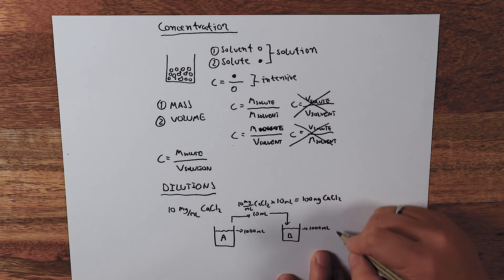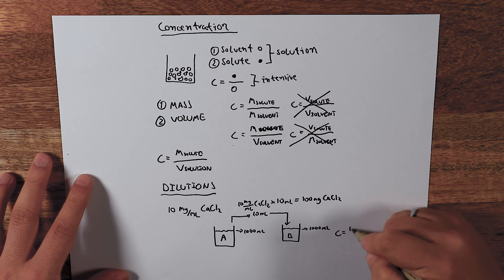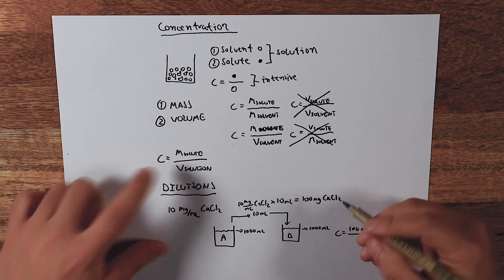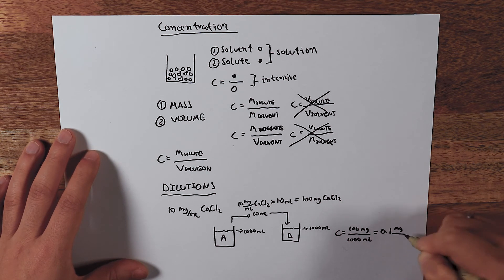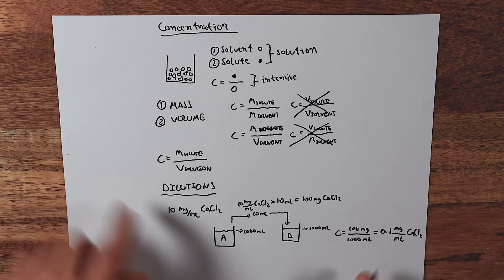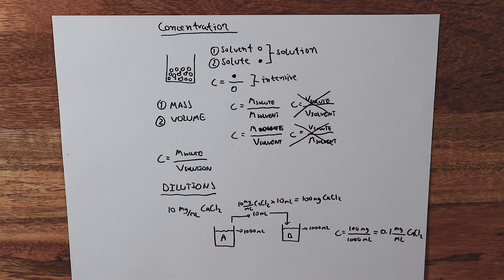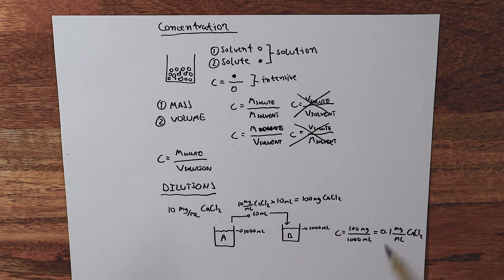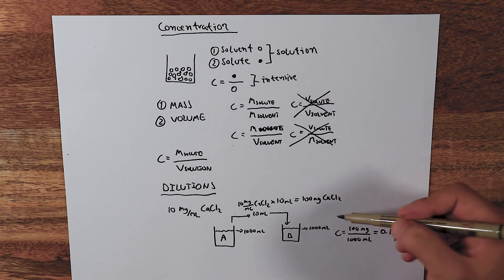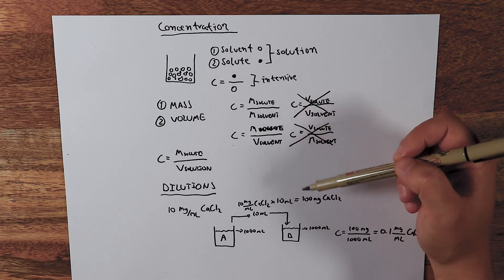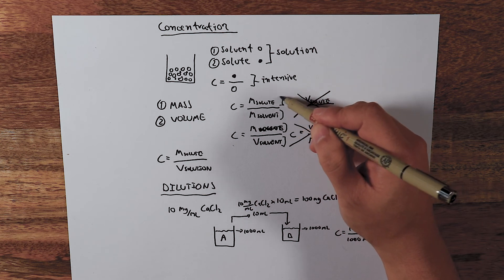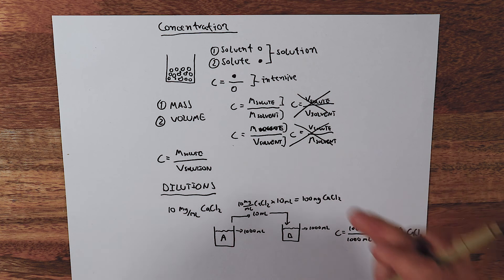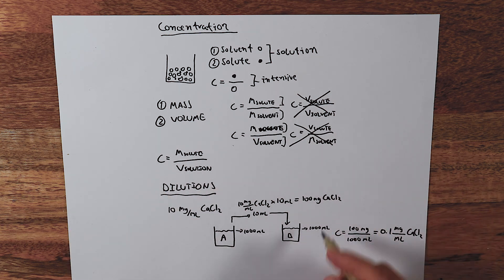The concentration of solution B equals the mass of the solute, 100 milligrams, over the volume of the solution, 1,000 milliliters, which equals 0.1 milligrams per milliliter of calcium chloride — exactly 100 times more diluted. This is very intuitive: we took 10 milliliters to 100 times that volume and got a solution 100 times more diluted. This would be very hard to carry out with mass-over-mass or mass-over-solvent-volume units, because those units don't tell you anything about the solution as a whole.